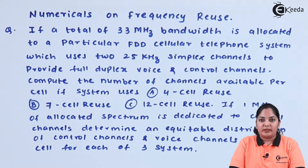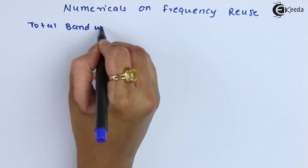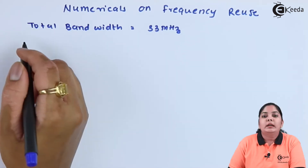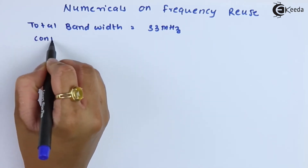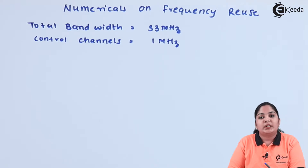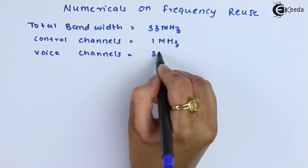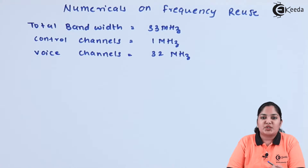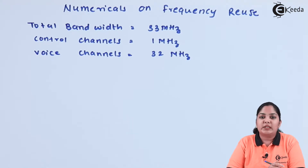Total bandwidth is given as 33 MHz. It is said that 1 MHz is used for control channels only. Hence, for voice channels we are left with only 32 MHz. One simplex channel is of 25 kHz. Because we require duplex communication, we require two channels, so one pair of duplex communication requires 50 kHz.